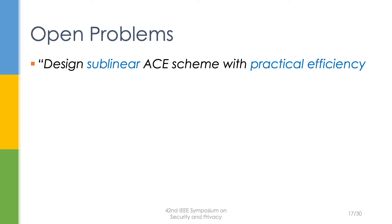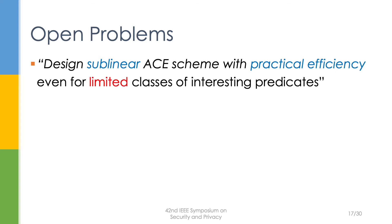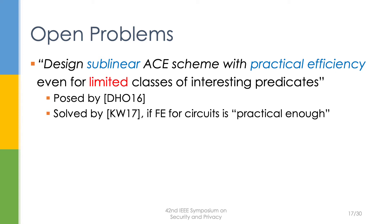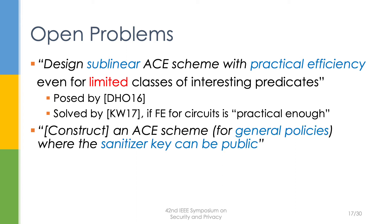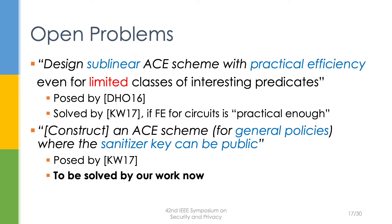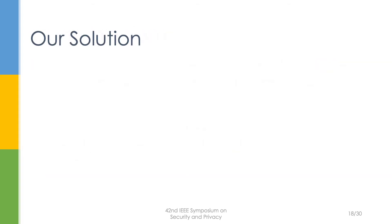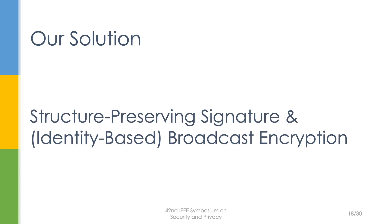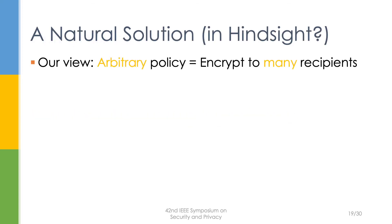This work aims to solve the open problem left by the seminal work, which is to design a sublinear ACE scheme with practical efficiency. Note that Kim and Wu's approach uses a functional key as the sanitisation key, and they left as an open problem to construct an ACE scheme for general policy where sanitisation can be keyless. We solve both problems. Our solution is based on structure-preserving signatures and identity-based broadcast encryption.